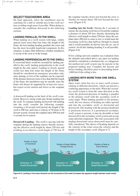When landing on a swell system with large, widely spaced crests more than four times the length of the floats, the best landing heading parallels the crests and has the most favorable headwind component. It makes little difference whether touchdown is on top of the crest or in the trough. If crosswind limits would be exceeded by landing parallel to the swell, landing perpendicular to the swell might be the only option. Landing in closely spaced swells less than four times the length of the floats should be considered an emergency procedure only, since damage or loss of the seaplane can be expected. If the distance between crests is less than half the length of the floats, the touchdown may be smooth since the floats will always be supported by at least two waves, but expect severe motion and forces as the seaplane slows. A downswell landing on the back of the swell is preferred; however, strong winds may dictate landing into the swell.